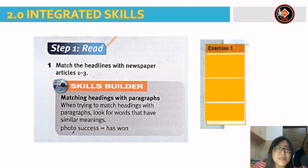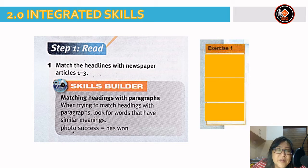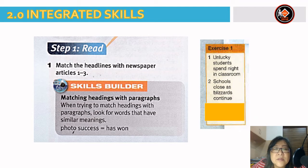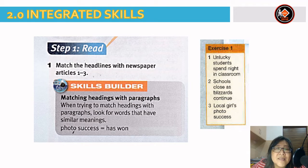Okay students, match the headlines with the newspaper articles 1, 2 and 3. First, look at the skill builders — matching headings with paragraphs. When trying to match headings with paragraphs, look for words that have similar meanings. For example, 'photo success' has the meaning of 'has won'. Article 1 headline: Unlucky students spend night in classroom. Number 2: Schools close as blizzards continue. Number 3: Local girl's photo success.